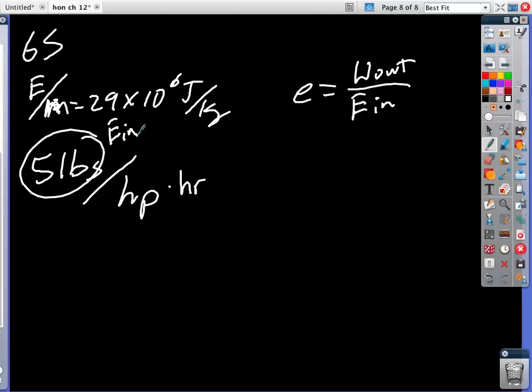This is the energy in, and then the work out is the horsepower times an hour. Because the horsepower is 746 watts, which is joules per second, in an hour. So all you have to do is solve for that. I'll go ahead and do that, actually.